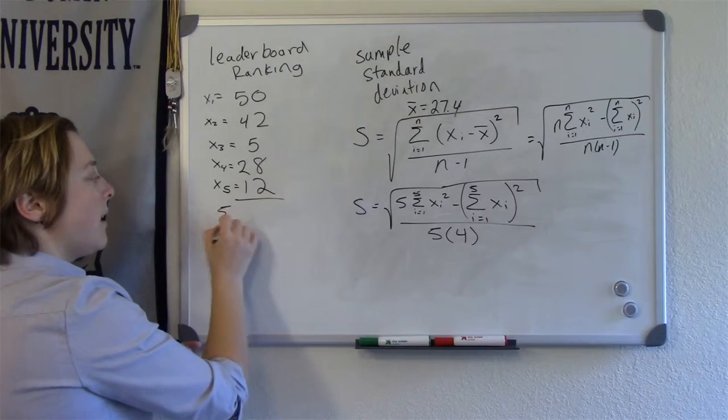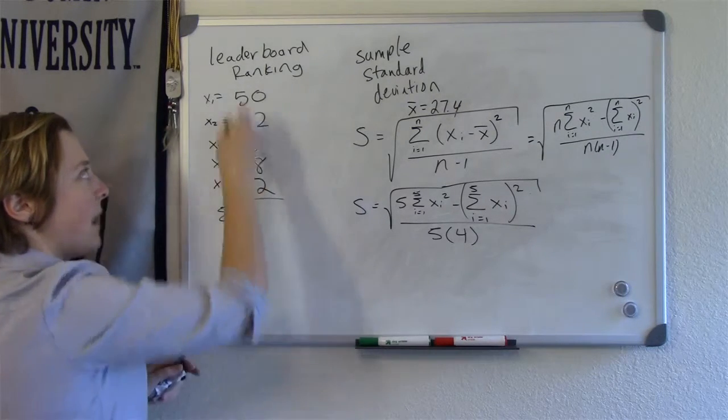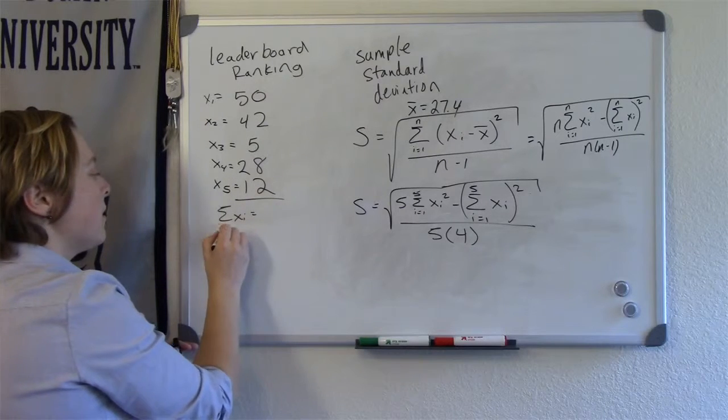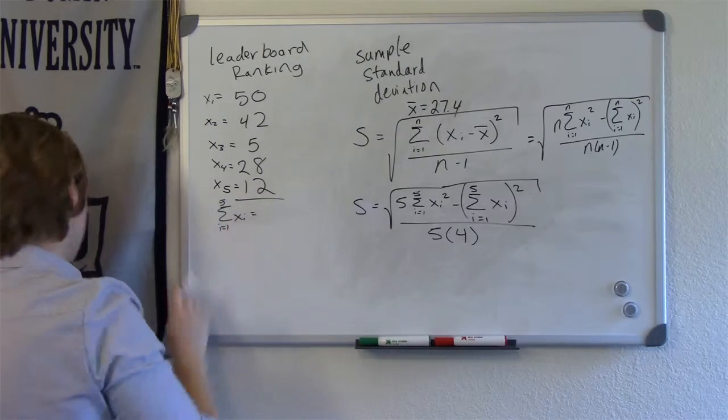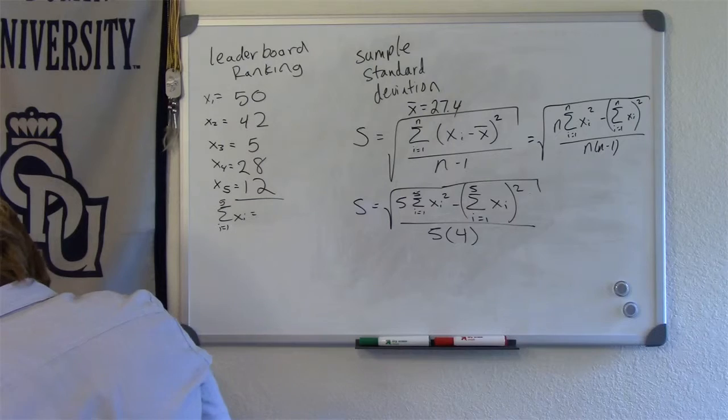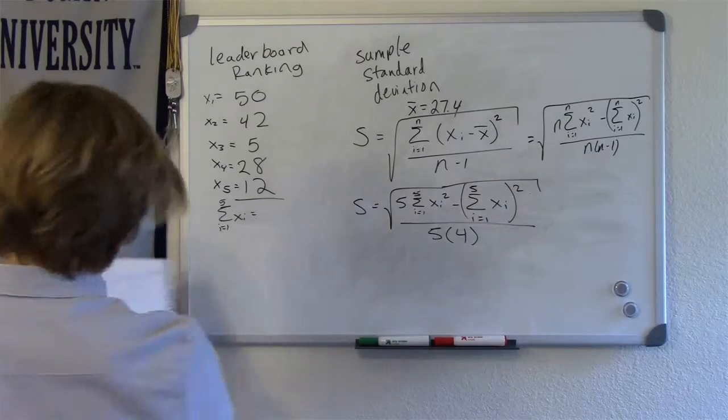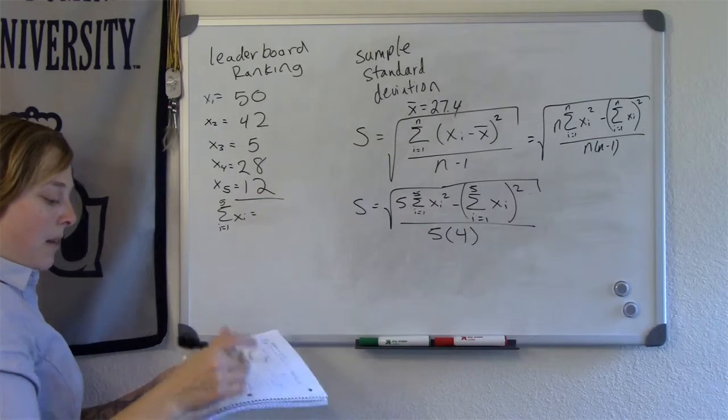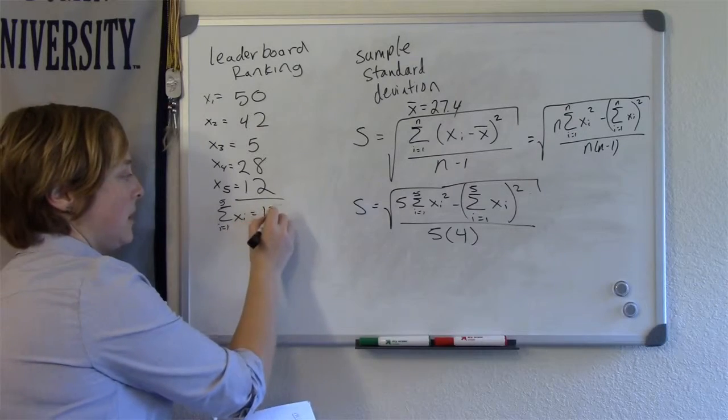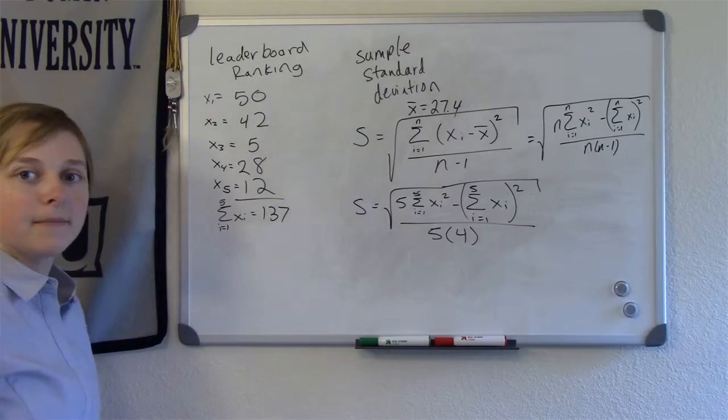So the sum of xi, that's easy. All you have to do is add up all of these numbers from i equals 1 to 5. When we've done that before, we've added them up and we found that this was 137.